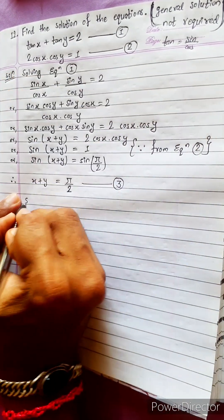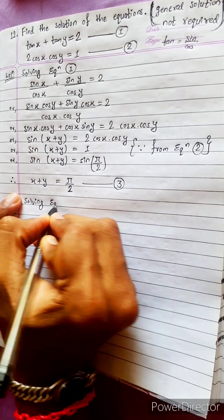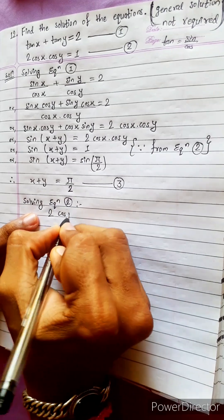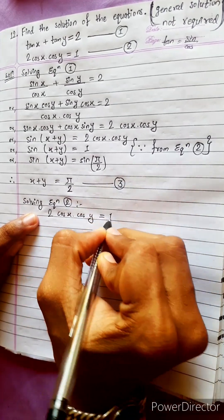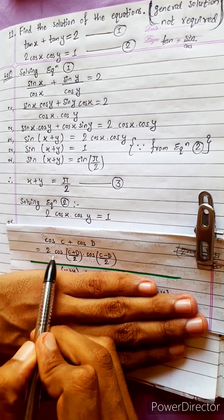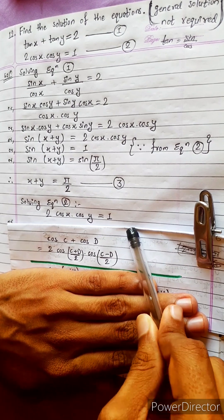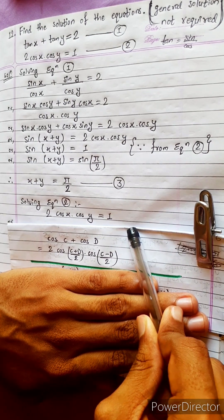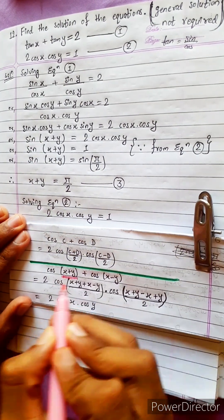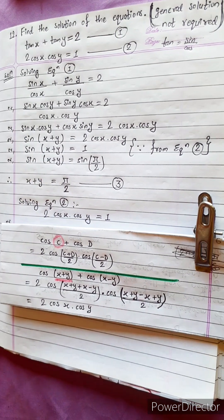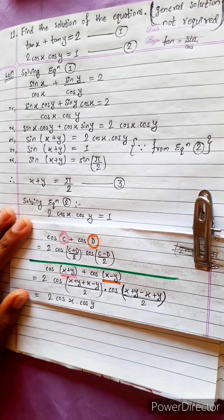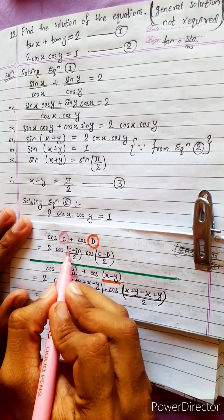Now solving equation 2. Let's solve equation 2 and see what we get. 2 cos x cos y equals 1. Using the formula: cos c + cos d equals 2 cos((c+d)/2) · cos((c−d)/2). We will write it in terms of cos c plus d and cos c minus d by 2.